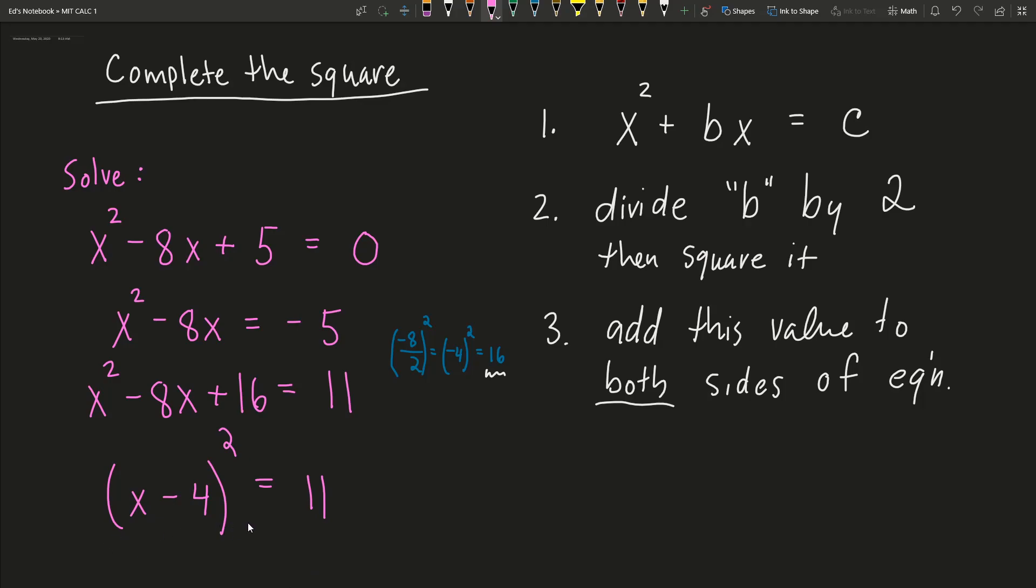If you expand this out, you will see that you will get this left-hand side, right? x times -4 twice gives you the -8x. And -4 squared gives you 16.